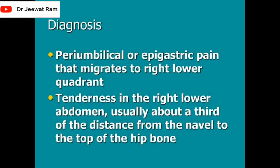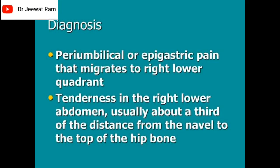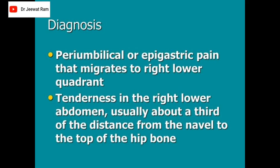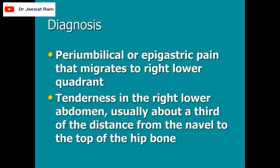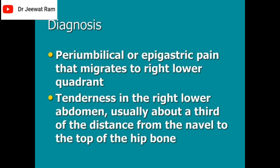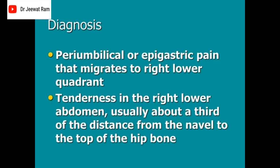Diagnosis: peri-umbilical or epigastric pain that migrates to the right lower quadrant, and tenderness in the right lower abdomen, usually about a third of the distance from the navel to the top of the hip bone.